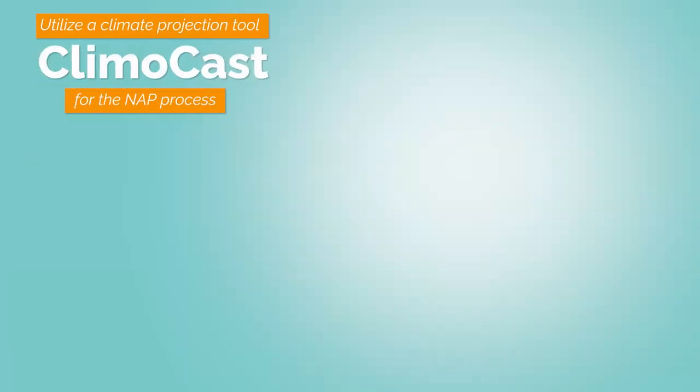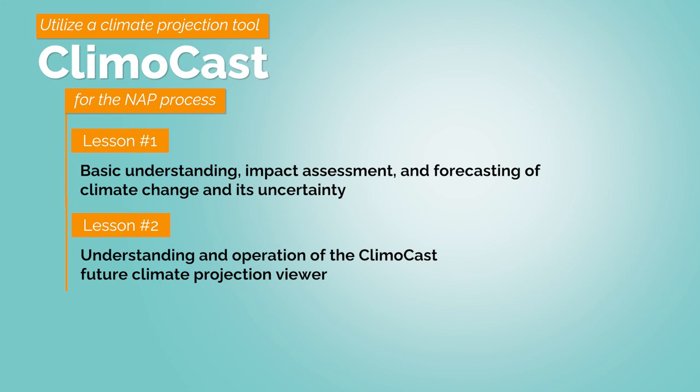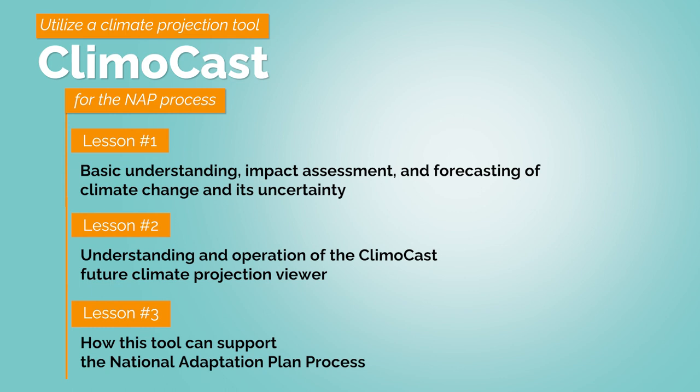This brings us to the end of Lesson 3, where you learned about the NAP process and how you can use data from Climocast in some of the elements of the NAP process. This is also the end of our course on how to use the software tool Climocast to support climate change adaptation planning. In Lesson 1, we reviewed important concepts of climate change, impact assessment, and climate change forecasting and its uncertainty. In Lesson 2, you learned how to use the Climocast Future Climate Projection Viewer. And finally, in Lesson 3, you learned how this tool could be used to support the national adaptation planning process. Now it is your turn to use this newly acquired knowledge in the climate change adaptation process of your own country or district.